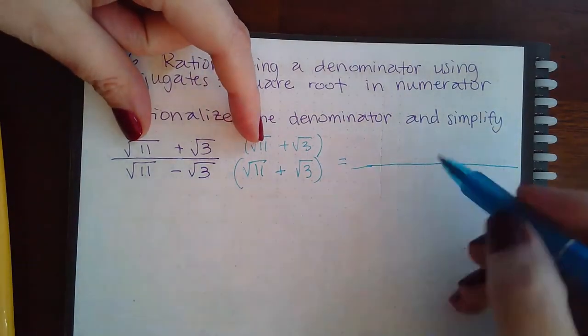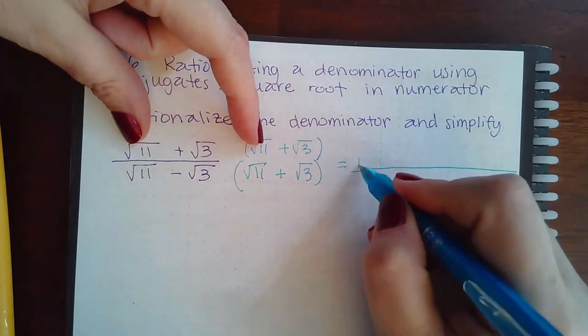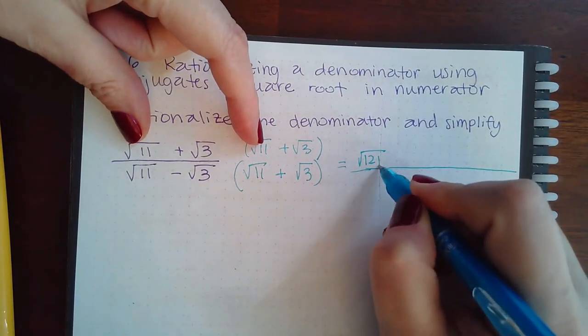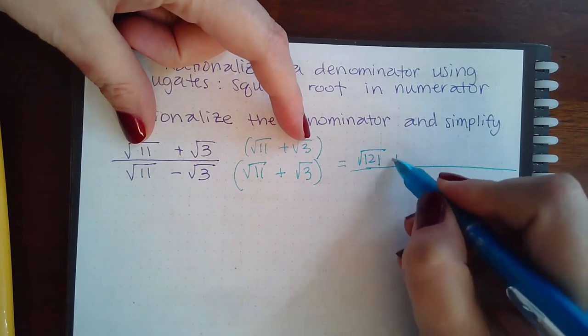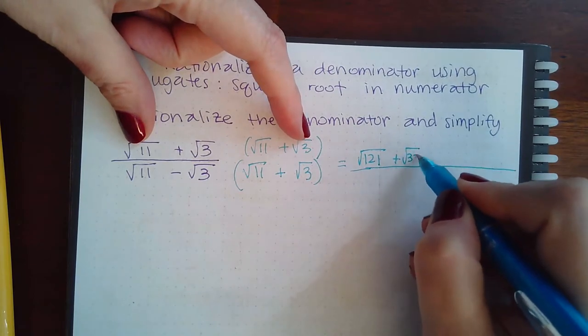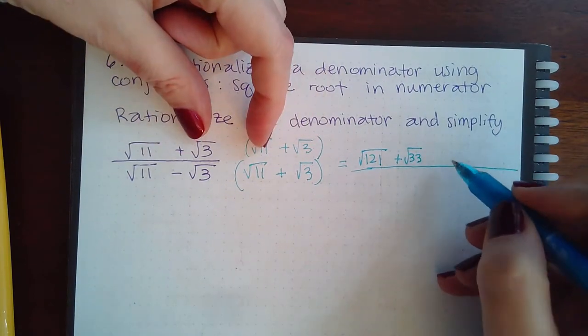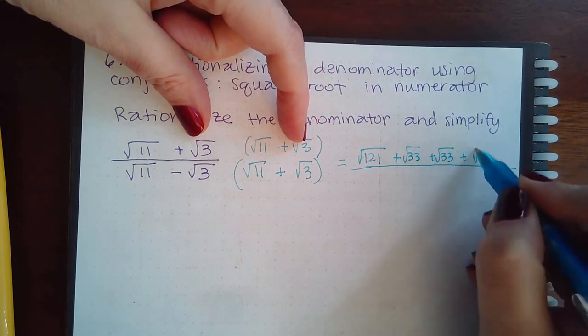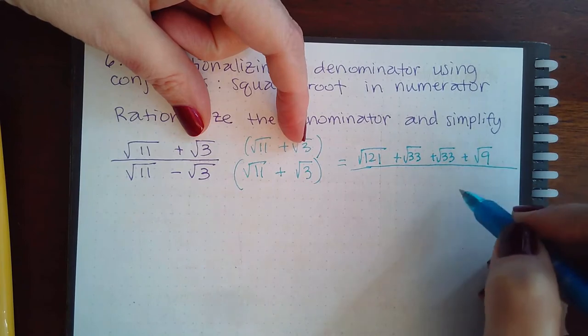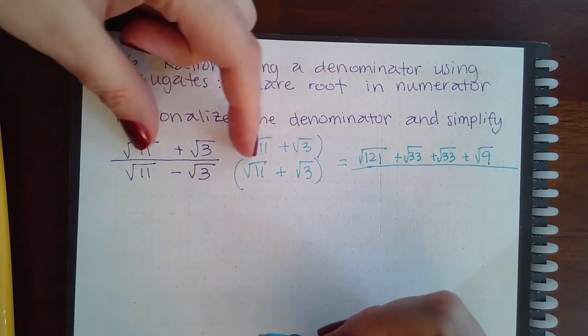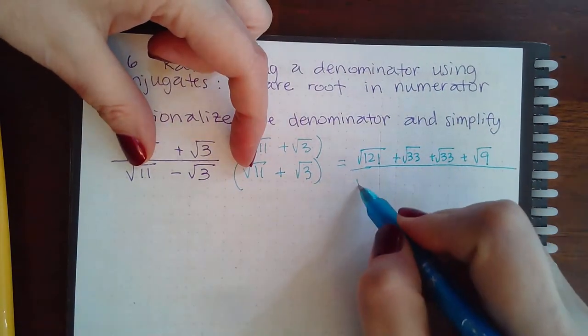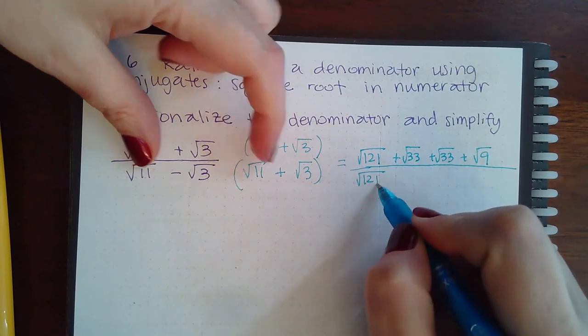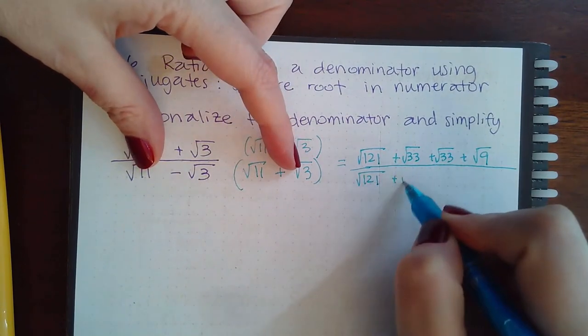So first I'm going to multiply these two, that gives me √121. Then I'm going to multiply these two, that gives me √33. Then I'm going to multiply these two, that's √33 again. And then multiply these two, that's √9. Now I'm going to do the same thing to the bottom. So multiply these two, √121. Multiply these two, √33.